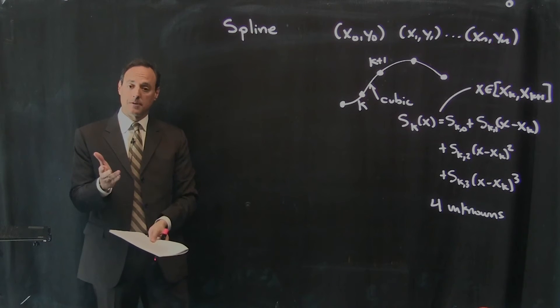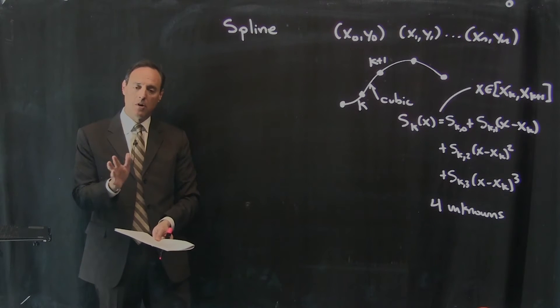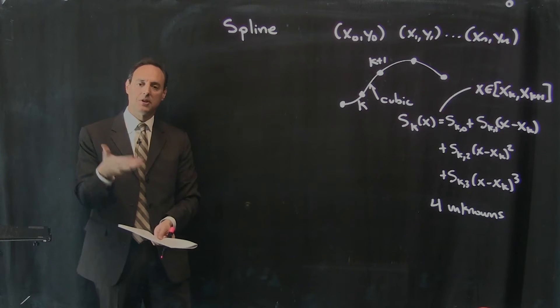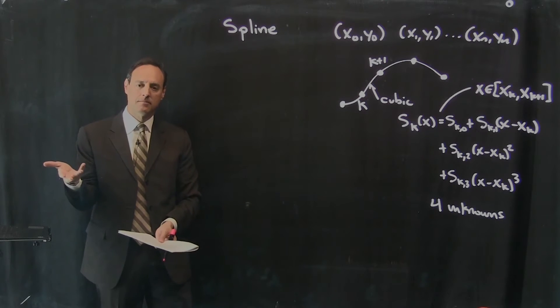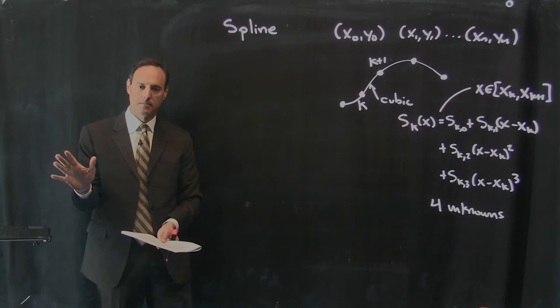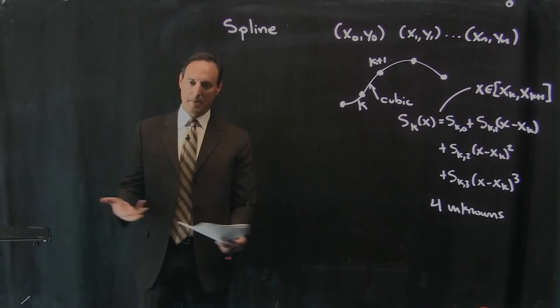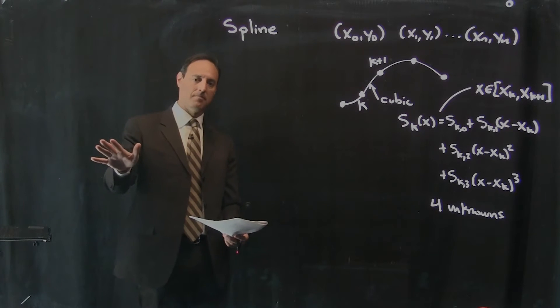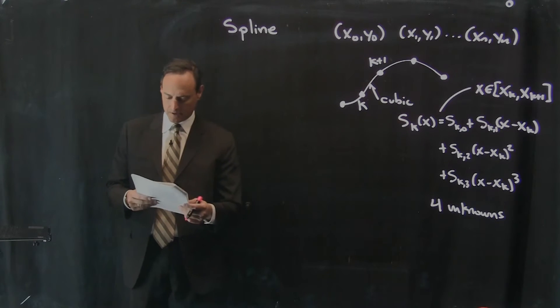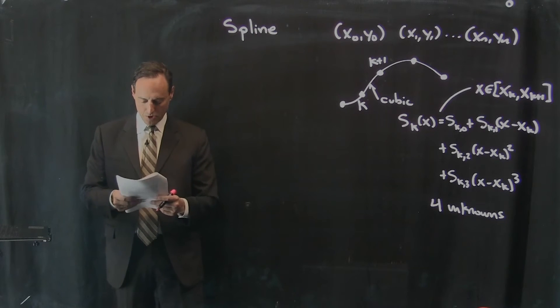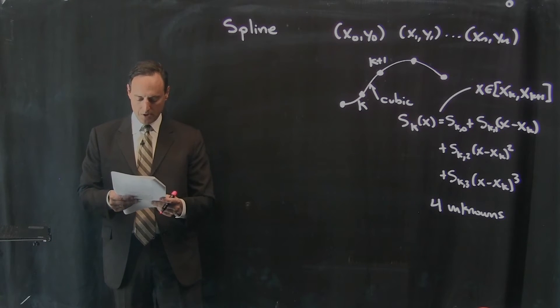All right. So what are the constraints? We're just going to do an equation count. All this is going to come down to is solving Ax equal to b. It's as simple as that. And we're going to basically say we have so many unknowns, so many constraints, match them up, do a backslash, you're done. That's all the spline's going to do.